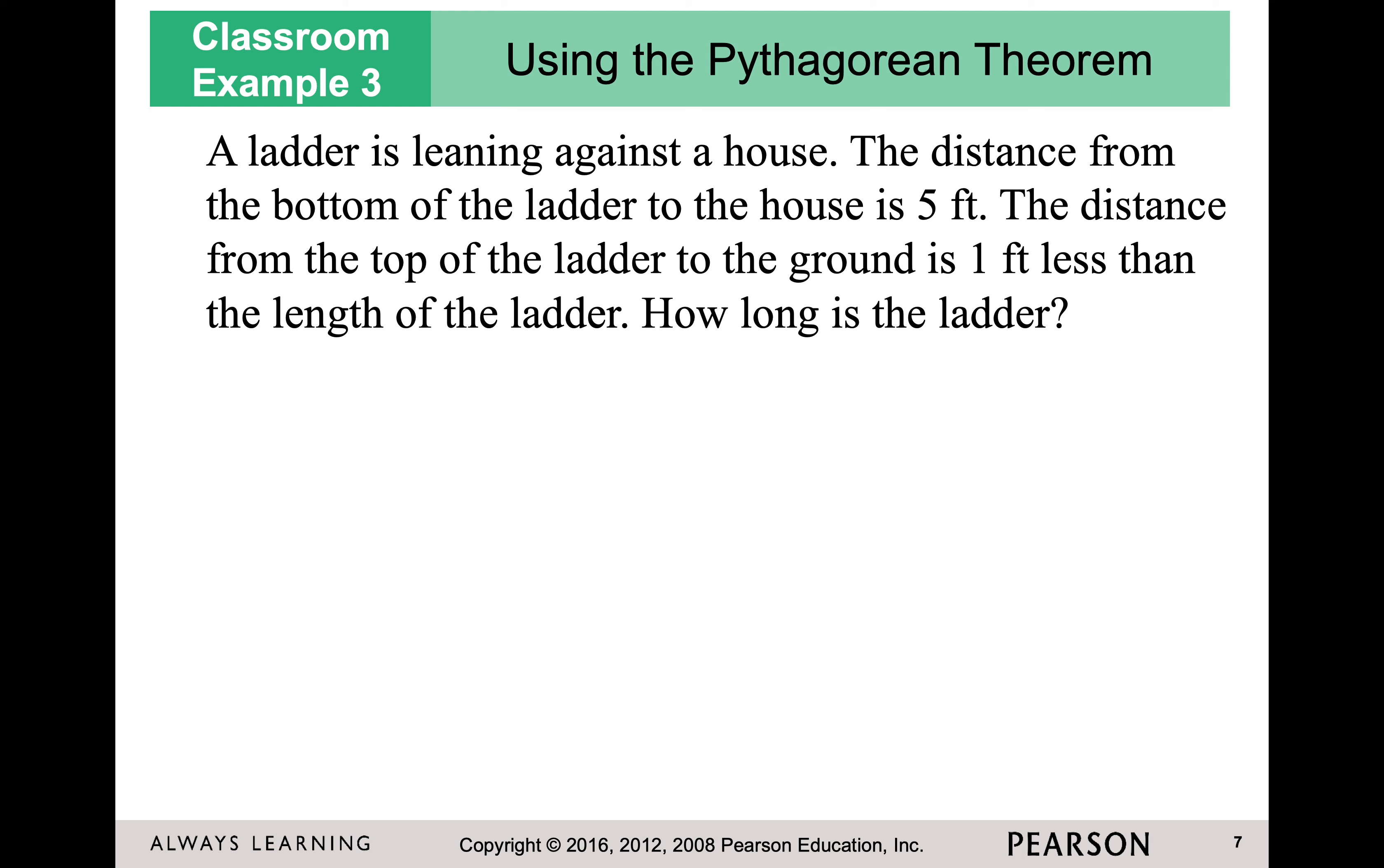So if I'm looking at this ladder, I've got an image and I know that x is the length of my ladder and it's leaning against the house. So it forms a triangle. The distance from the bottom of that ladder to the house is five feet. So in my triangle, that bottom measurement is five feet. The distance from the top of the ladder to the ground is one foot less than the length of the ladder. So it would be x minus one, the length.